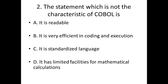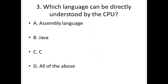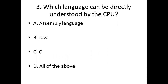Third bit: Which language can be directly understood by the CPU? Option A: assembly language. Option B: Java. Option C: C. Option D: all of the above. Answer: Option A — assembly language.